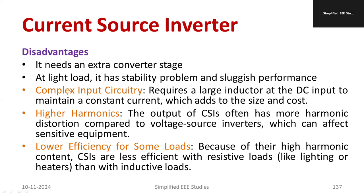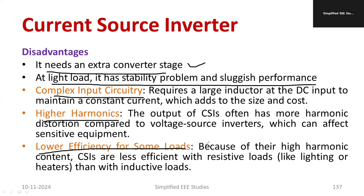We have to see the following drawbacks: complex input circuitry. We require additional stages, need extra stages. For light load, there is a stability issue because it generates high harmonic content. Because of high harmonic content, it is suitable only for inductive load, heavy inductive load, not for resistive load, especially lighting load. Compared to voltage source inverter, efficiency is drastically down. These are the major setbacks of current source inverter.